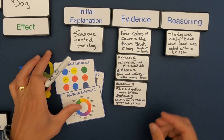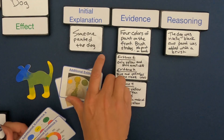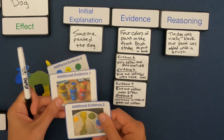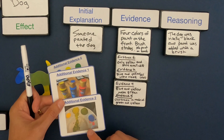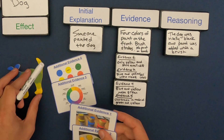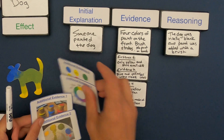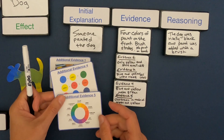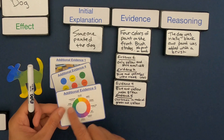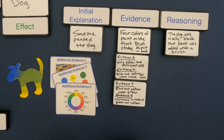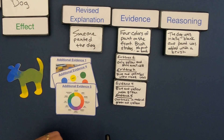The additional evidence from one and two tells me that only yellow and blue were available, and they were mixed in the tray — all four colors represented on the dog are present in the mixing tray. From evidence four and five, I can see that blue and yellow make green, and yellow and green make chartreuse. So now I've got good evidence and I want to revise my explanation.